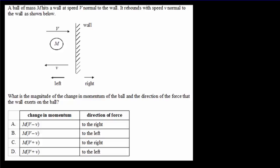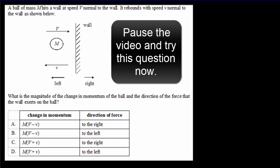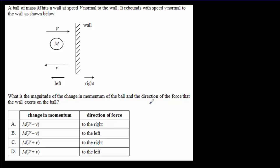For the second IB question: the force on the ball from the wall has to be to the left — it's a normal force from the wall — so it's either B or D. The magnitude of the change in momentum equals the mass M times the sum of the speeds, V plus V. So the correct answer is D.